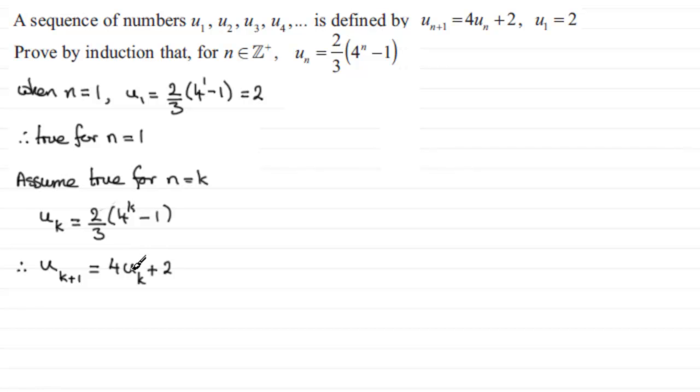Now we've got the kth term in the sequence, u_k, it's up here. So we can just substitute this into this equation here. So, we've got 4 multiplied by all of u_k, 2/3, 4 to the power k minus 1. And then we have the plus 2 on the end here.